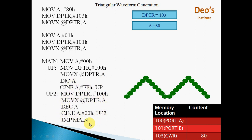So the first loop increments from 00H to FFH, and the second loop decrements from FFH to 00H. When it returns to 0, the same procedure is called again to increment from 00H to FFH. This is how the triangular waveform is generated continuously.